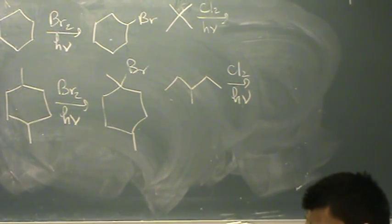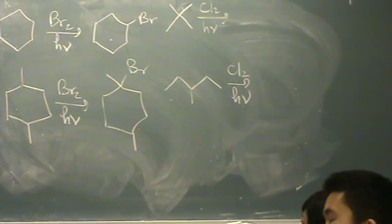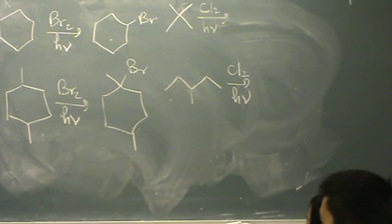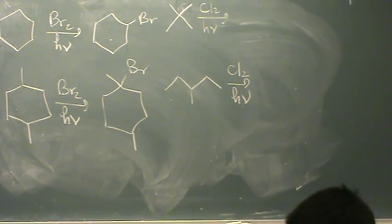Which we would say, in the question, would say write the major product. That's how it would be written. Okay, for the next one. Oh, so this, if you want to name it, would be 1-bromo-1,4-dimethyl-cyclohexane.